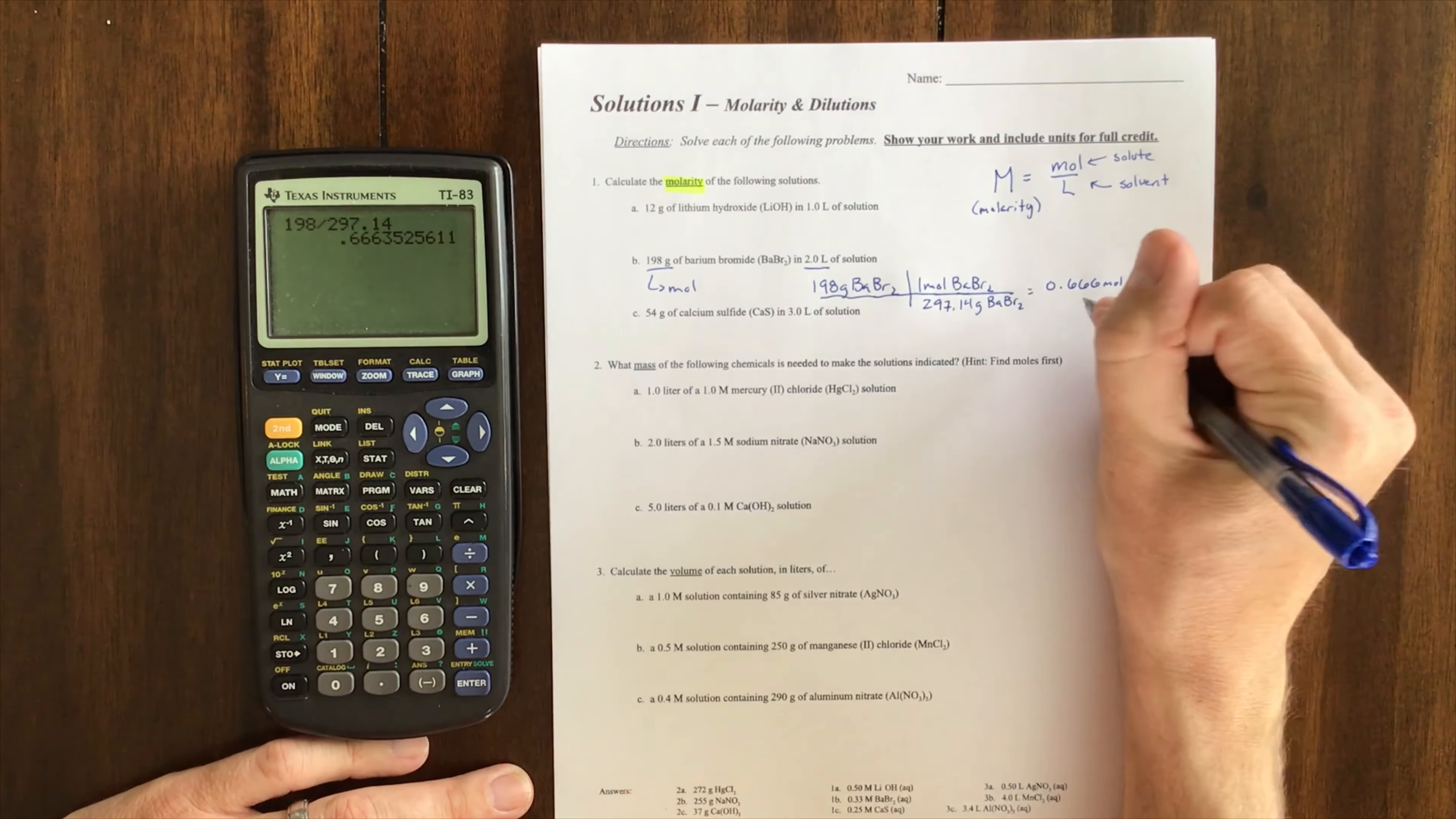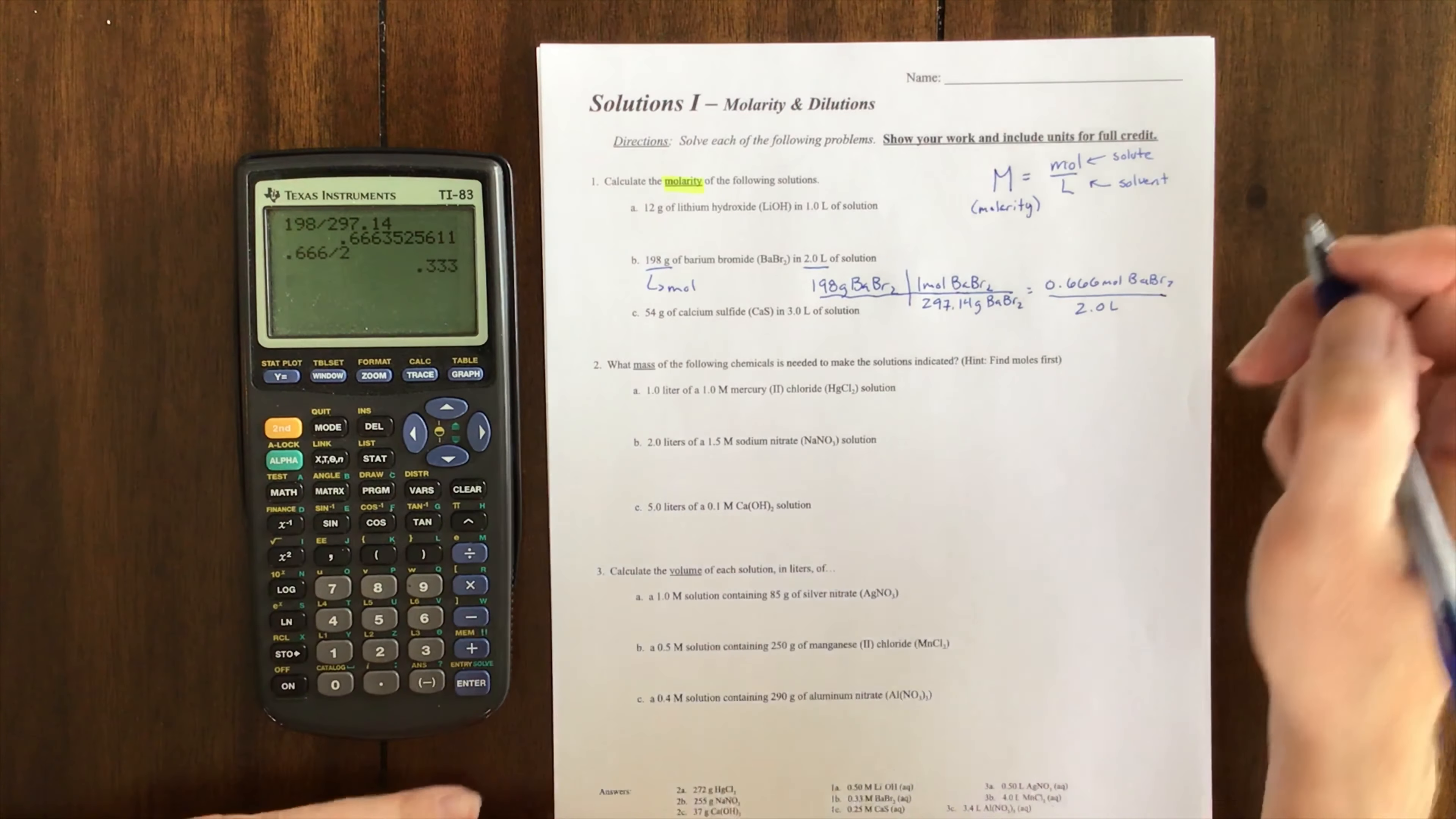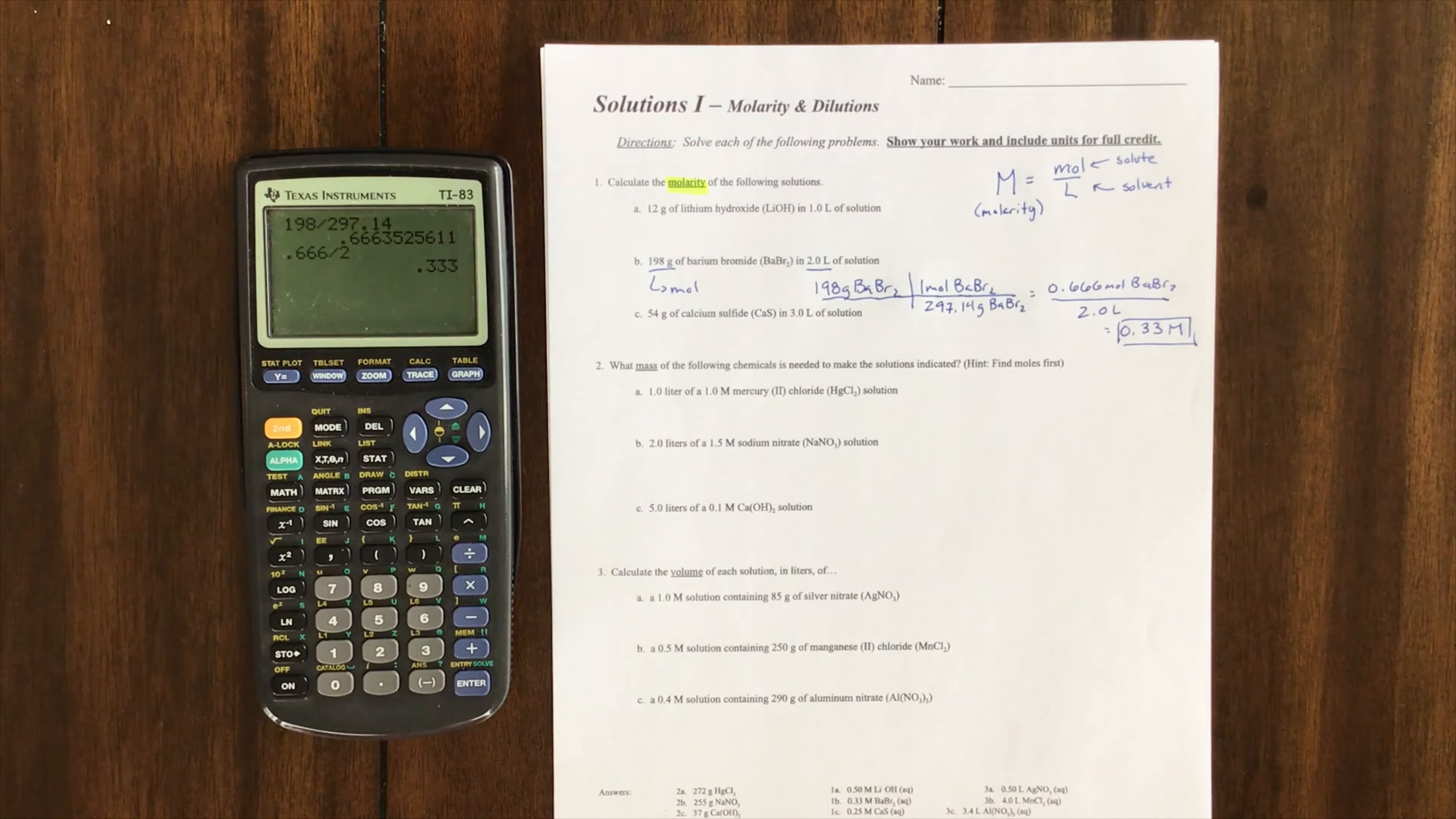I'm just going to put that—that's my moles—over my liters, which is 2.0 liters. If I do that divided by 2, I'm going to get 0.33 molarity, or molar, of my solution. That's what that first one would look like.